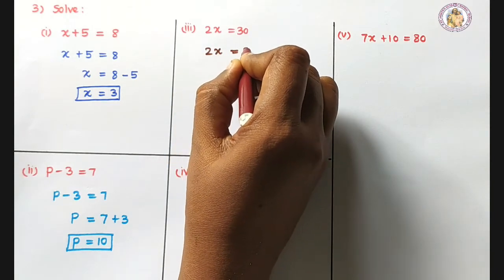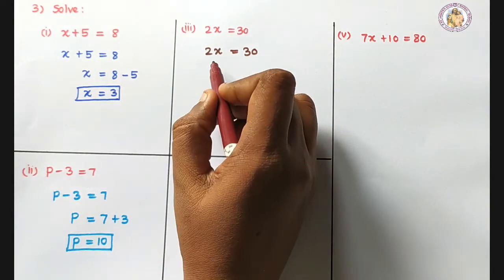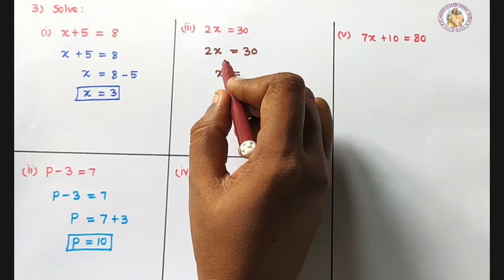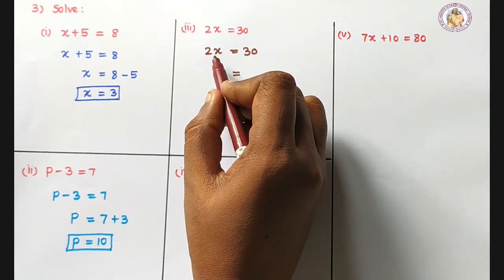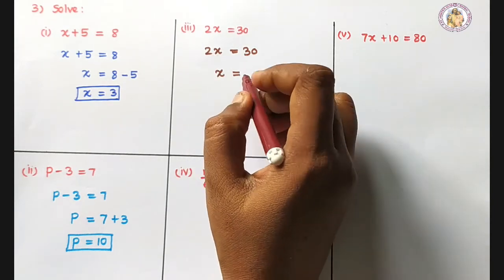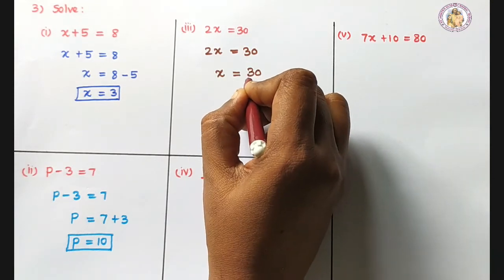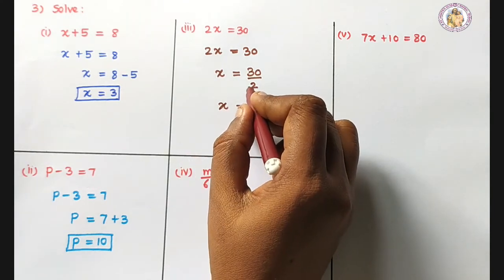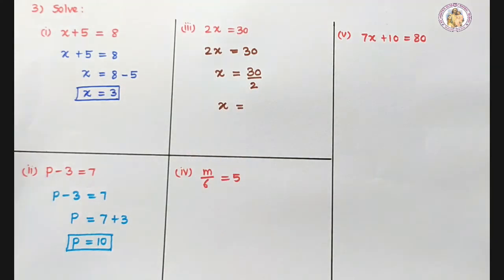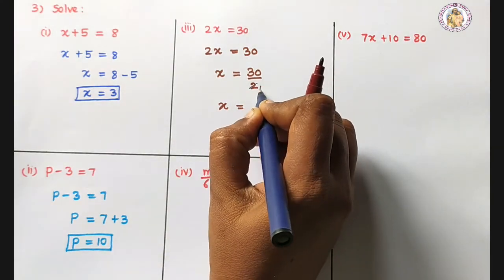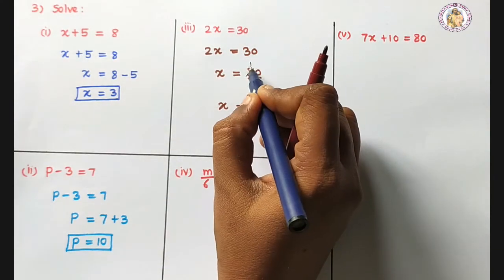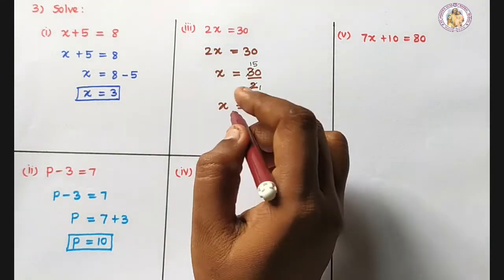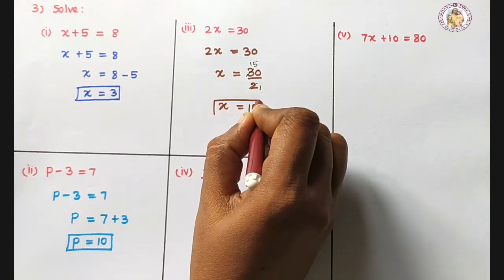Third: 2x equals 30. We want to find out the value of x. The relation between 2 and x is multiplication, so bringing it to the other side means division. x equals 30 divided by 2 — that is 15. So the value of x is 15.